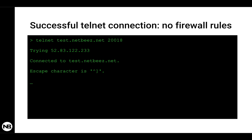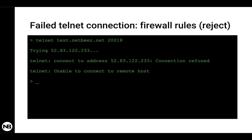Now let's see an example where there is a firewall in between. I run the same command: telnet test.netbiz.net 20018. You can see the correct DNS resolution, but then Telnet tells me 'connection refused' — meaning the host firewall or a network firewall is rejecting my connection. It sends a TCP reset, which means the firewall explicitly and actively blocks connections to that port.